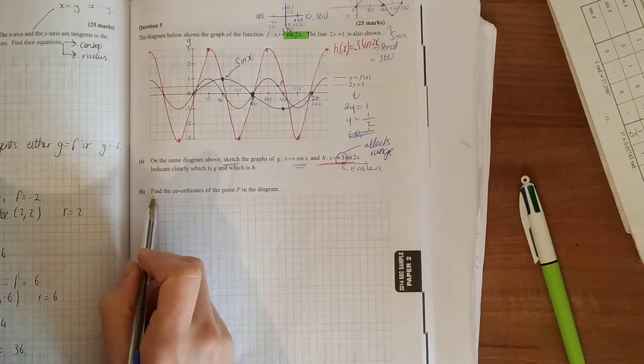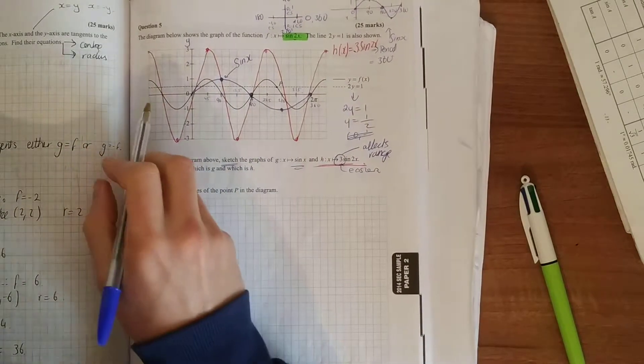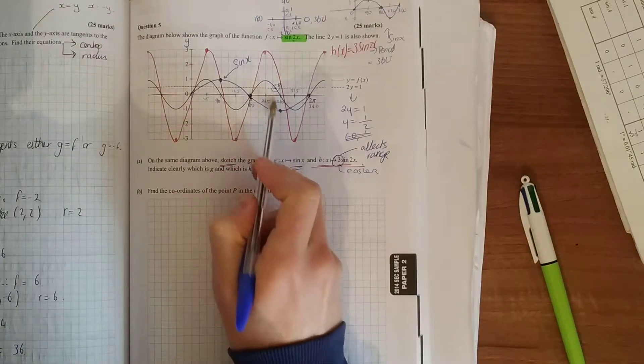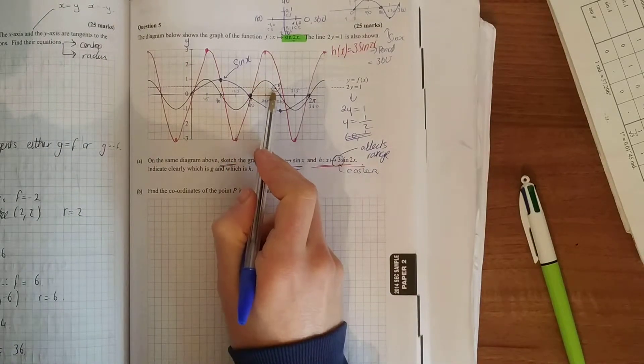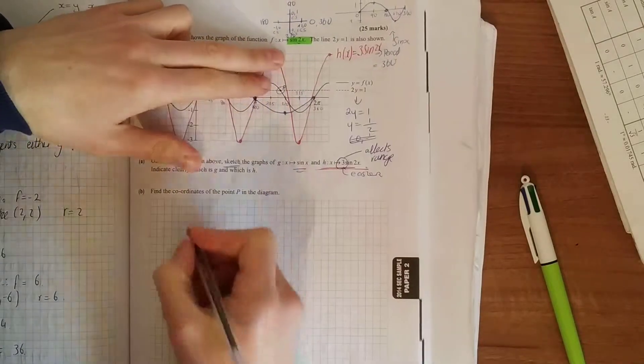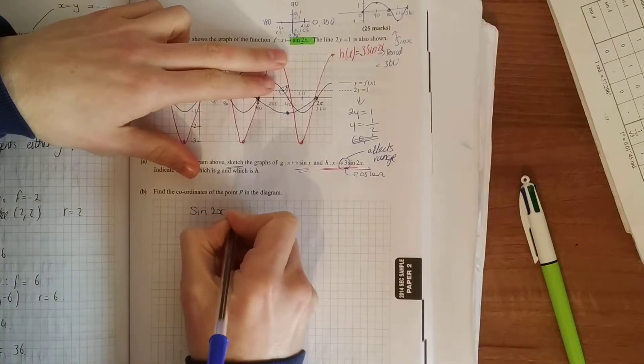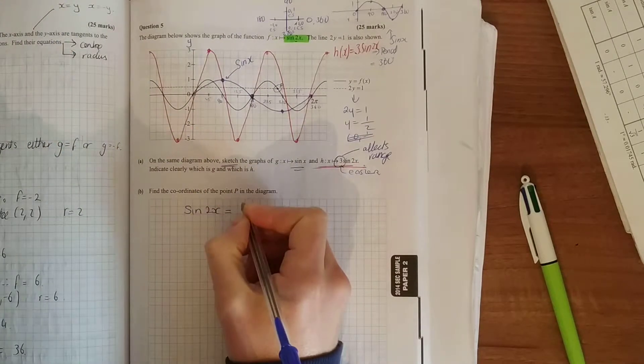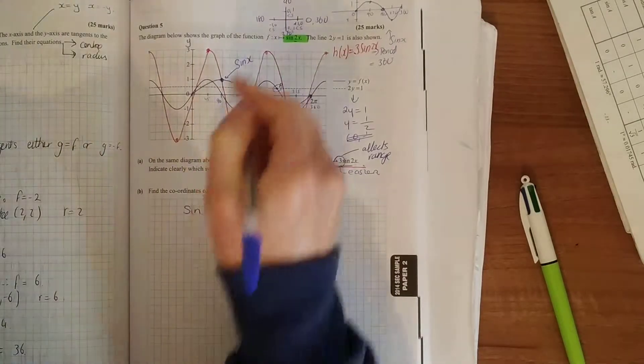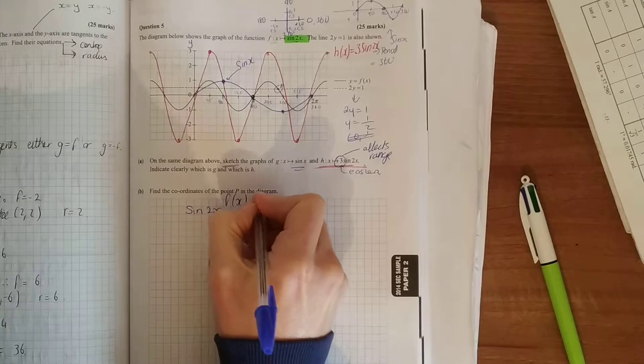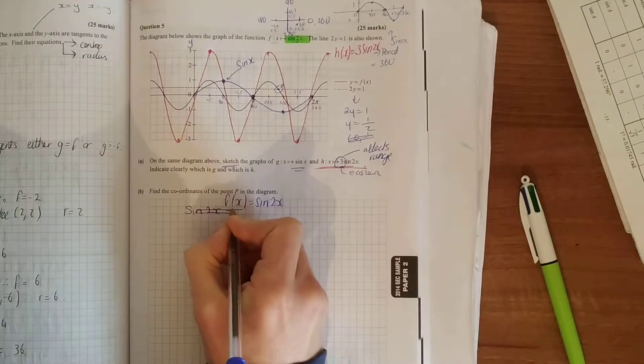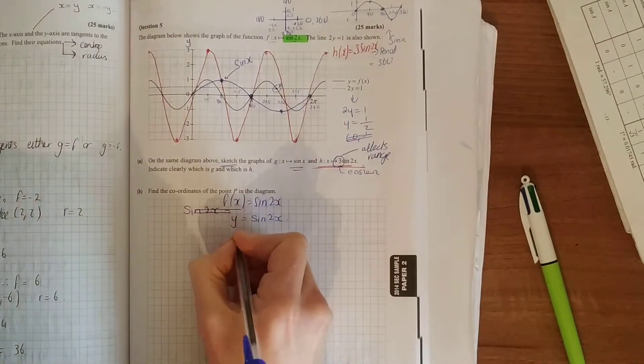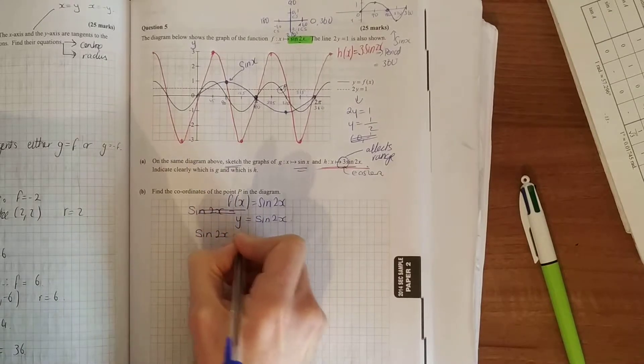Find the coordinates of the point P in the diagram. Point P is here. They're asking where is that black graph equal to the point P, and that black graph was sine 2x. They're asking where is sine 2x equal to a half, because point P is at a half. Where is y equal to a half? So sine 2x equals a half.